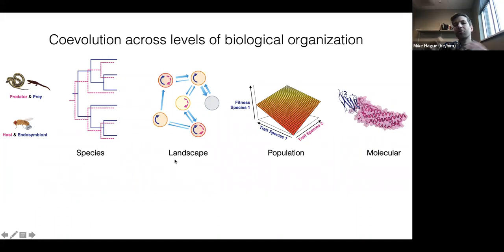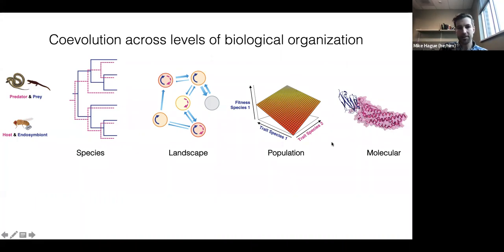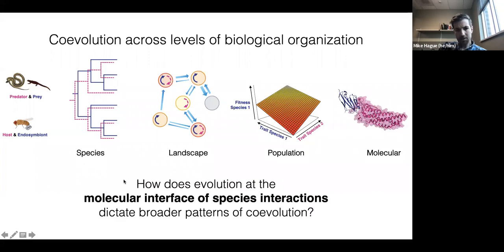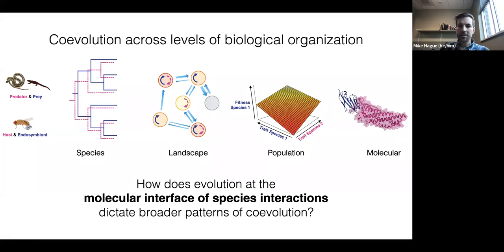My goal across my PhD and my postdoc has really been to integrate our understanding of co-evolution across these different levels of biological scale. Today I want to focus on how evolution at this molecular interface of species interactions — when you drill all the way down to the cellular and molecular level — tells us about broader patterns of co-evolution at the population, landscape, and species scale.